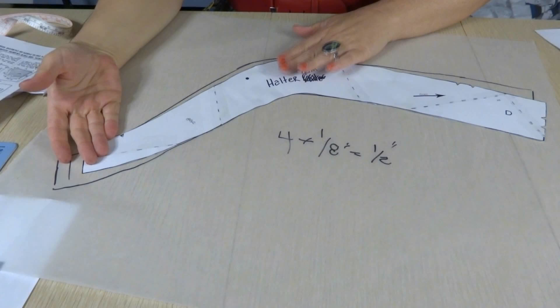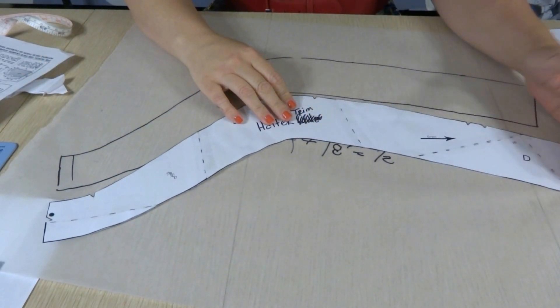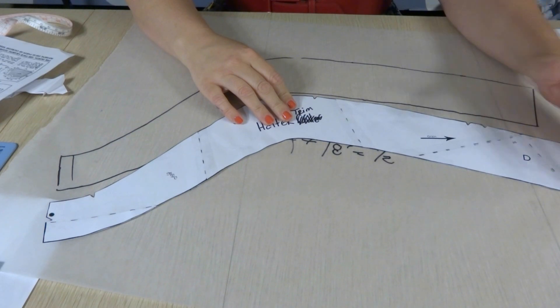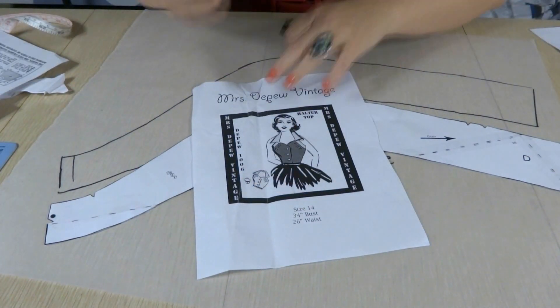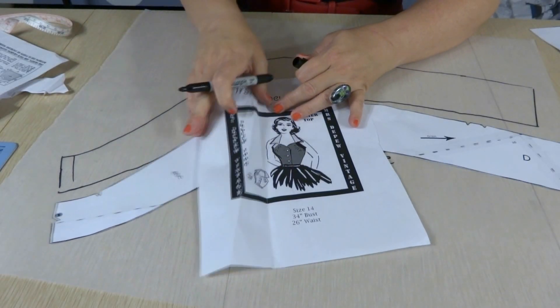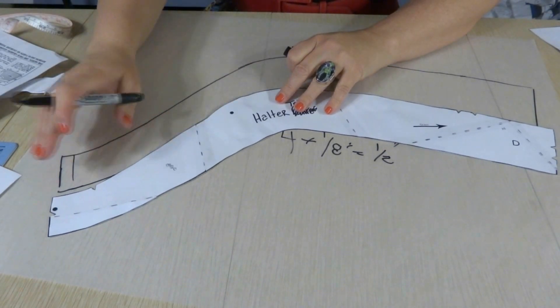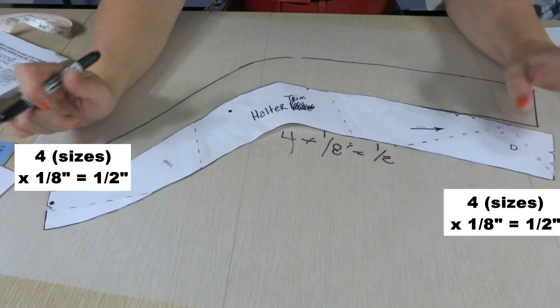Next up is our halter trim. You can see I've already adjusted it. For this, we just need to adjust the length since the halter trim, which is this section here, doesn't need to be widened. It just needs to be lengthened. So we're going to do the same on each end, an eighth of an inch for every size. So a half an inch on each side.